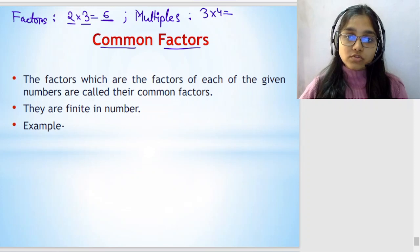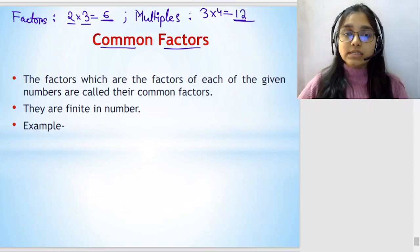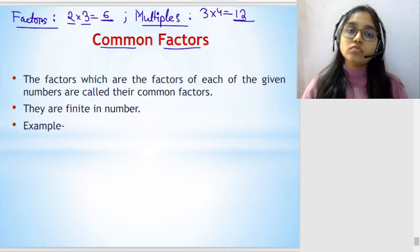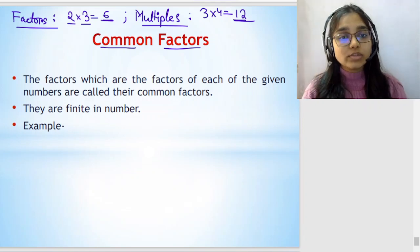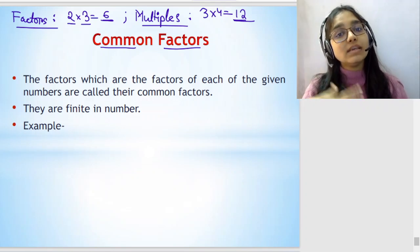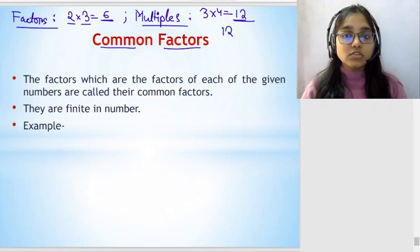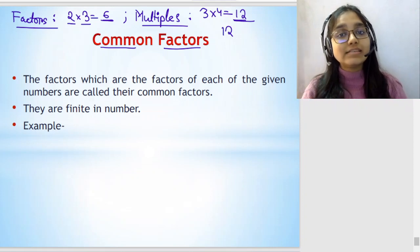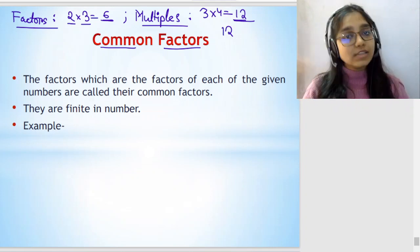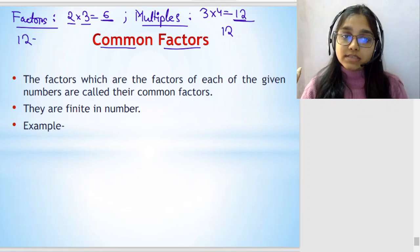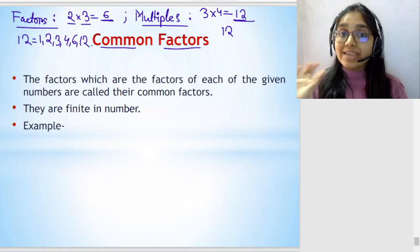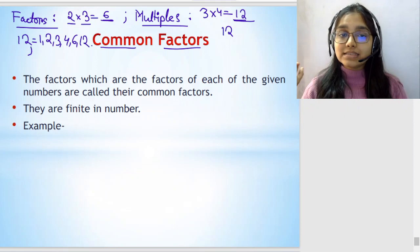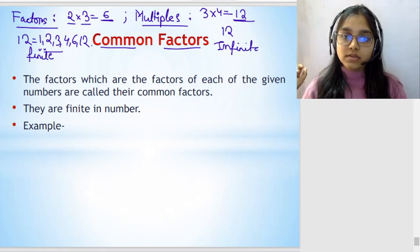So multiples: 3 into 4 equals 12. So this is a multiple, and these are factors. The product we get is the multiple. The numbers we multiply are the factors. So factors of any number are finite, meaning fixed. Multiples of any number are infinite, there is no end. Like if I say multiples of 12: 12 into 1 is 12, 12 into 2 is 24, 12 into 3 is 36, 12 into 4 is 48, 12 into 5 is 60, and so on. Factors, if I ask what are the factors of 12, it will be 1, 2, 3, 4, 6, 12. So it is stopping at some point. Hence factors are finite. Multiples are infinite.